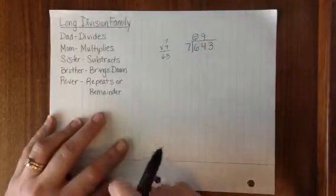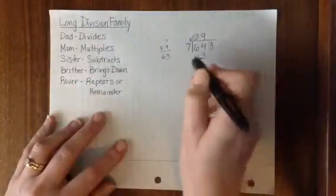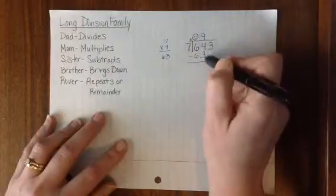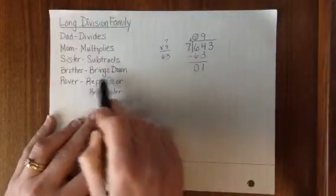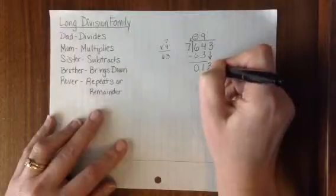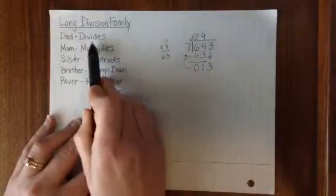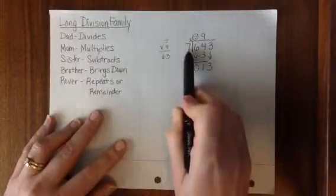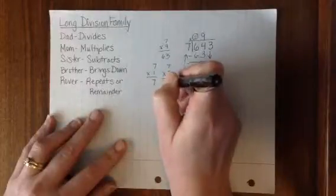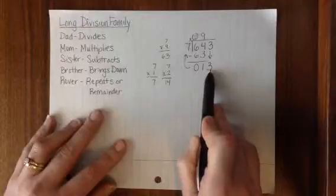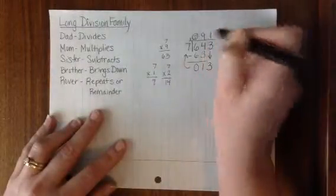And Mom says, Well, let me take over. 9 times 7 is 63. So she double-checked Dad's work. Sister says, Let me subtract. 4 take away 3 is 1. 6 take away 6 is 0. So I have 1 left. And Brother says, Well, there is a 3 to bring down. If I bring the 3 down, that gives a 13 for Rover to repeat with. That takes us back to Dad dividing. And Dad says, 13 divided by 7. Well, 7 times 1 is 7, 7 times 2 is 14. 14 is over 13, it would be too many. So Dad says, We can only say 7 times 1 here. So Dad puts the 1 in the quotient.